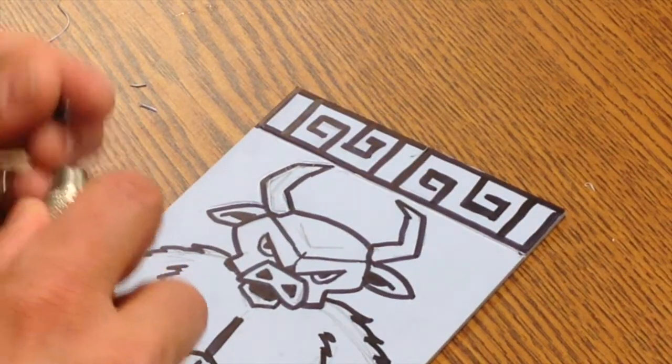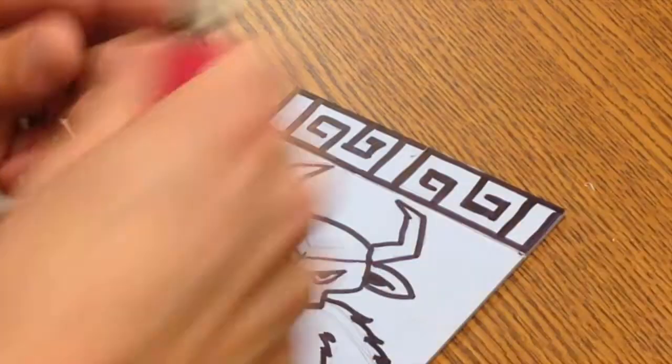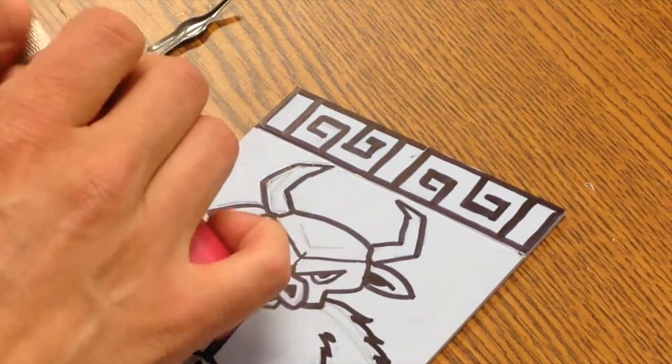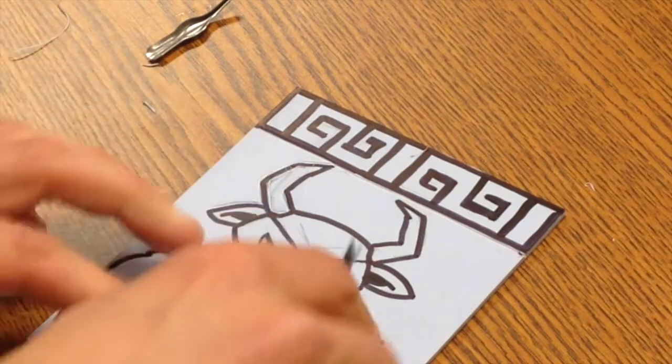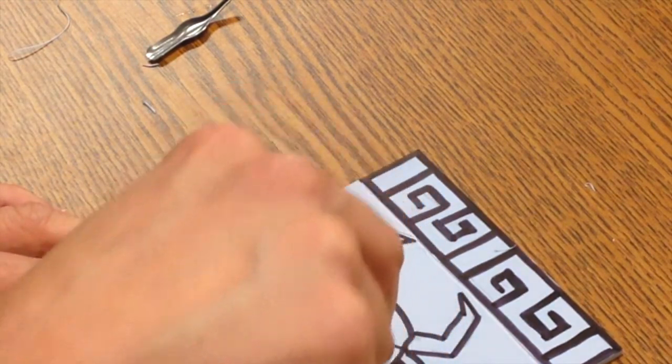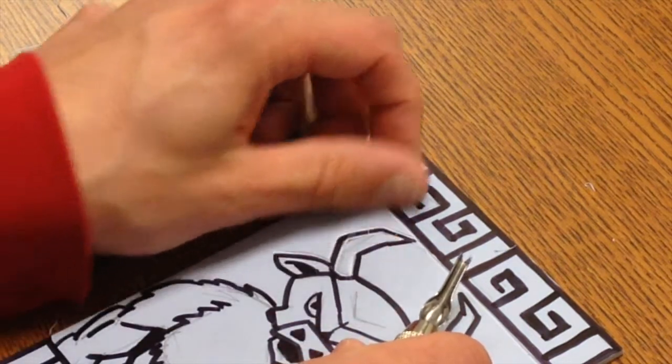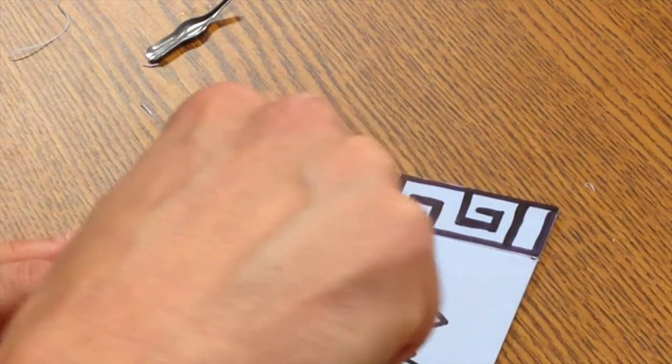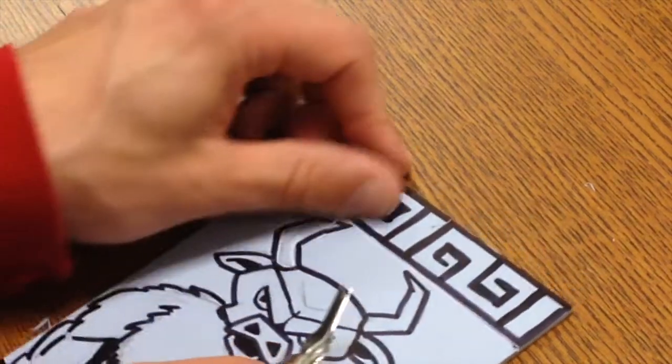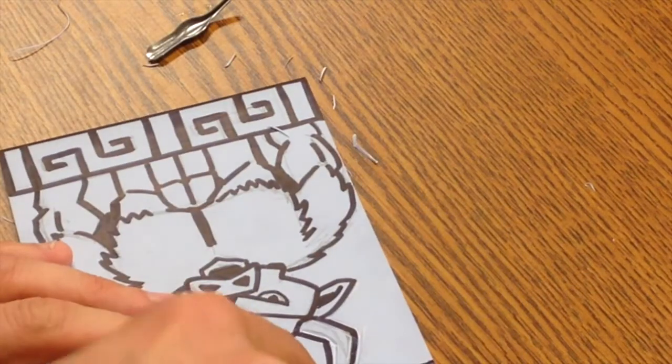And here's where I can take the number two and change that blade out. I'm going to get in just a little bit deeper, but I've got that thin line that I've already carved as a guideline. It makes cutting much easier.